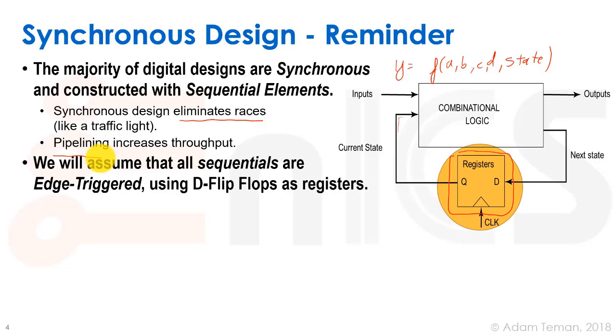So just for this course what we're going to do is we're going to assume that all our sequentials, all our registers are D flip-flops that are edge triggered. In this case they're going to also be positive edge triggered. We're going to mark that by having a little triangle on our flip-flops. Here the input is called D, the output is called Q, and that will be what we'll be using throughout the course.